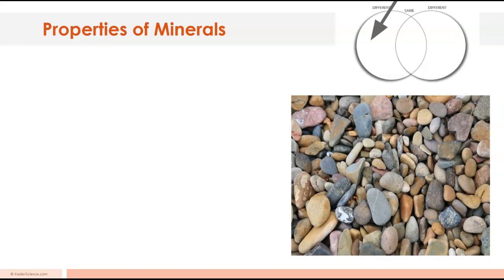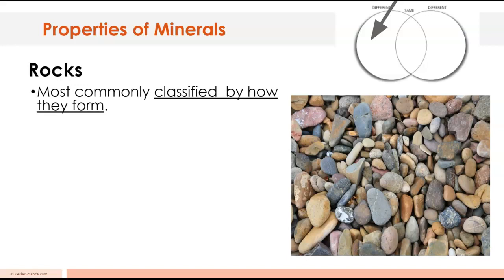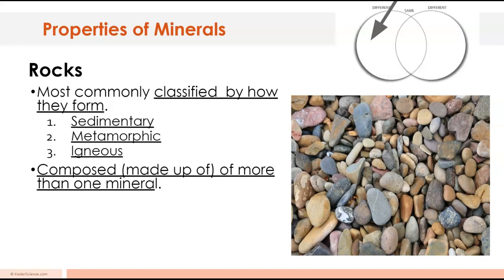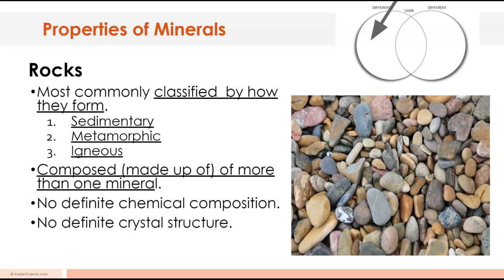Now we're going to look at the left hand side and we're going to talk about rocks. They're most commonly classified by how they form. The three main types of rocks are sedimentary, metamorphic, and igneous. Next week we're going to talk about the rock cycle. They're composed of minerals, so rocks are actually made of more than one mineral. There's no definite chemical composition. I can't say it's got six atoms of carbon and 12 atoms of silicon and three atoms of oxygen. They don't have a perfect recipe. Two pieces of granite could have different compositions of atoms and we'd still call them granite. There's no definite crystal structure. Go ahead and pause and copy that down.